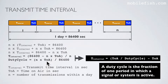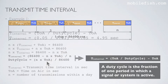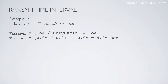The time on air is the time the message is being transmitted. Example 1: if the duty cycle is 1% and the time on air is 0.05 seconds, the transmit time interval is 4.95 seconds.